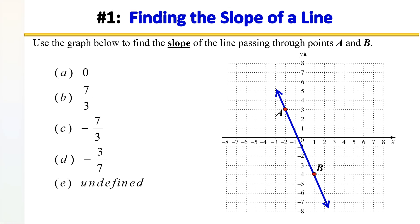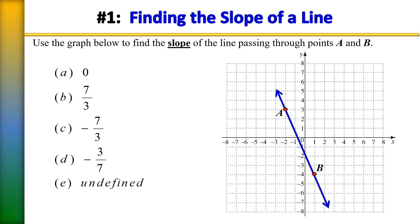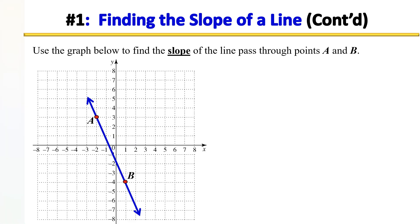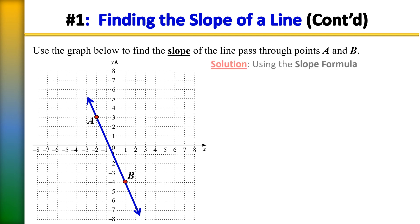In problem number one, we are asked to use the graph below to find the slope of the line passing through points A and B. The correct answer is C. One method we can use to solve this problem is the slope formula. Recall that if you know any two points on a line you can plug the points into the slope formula, which is y₂ minus y₁ over x₂ minus x₁.